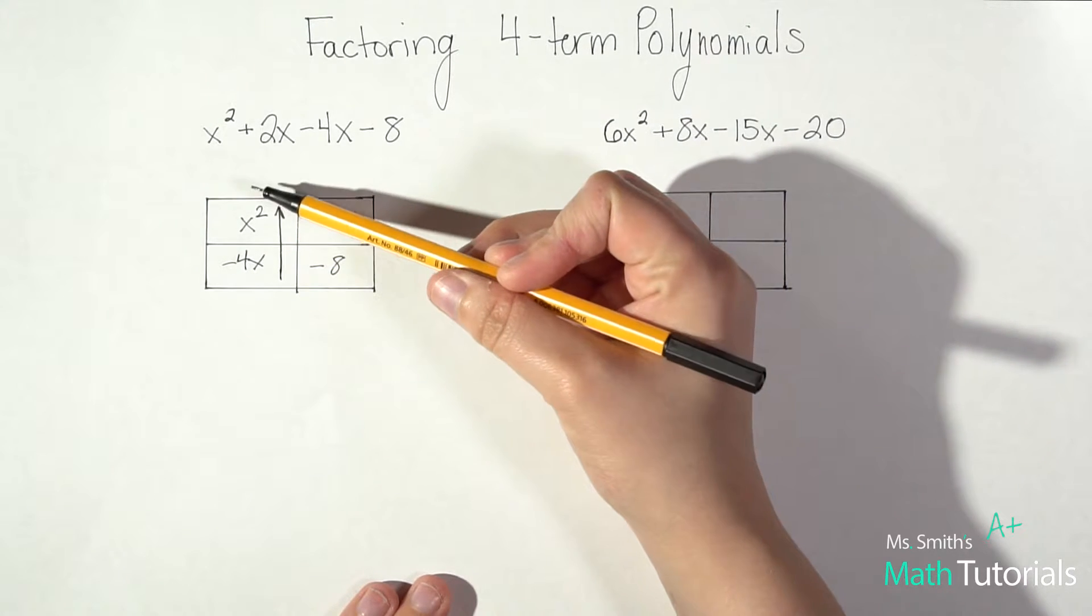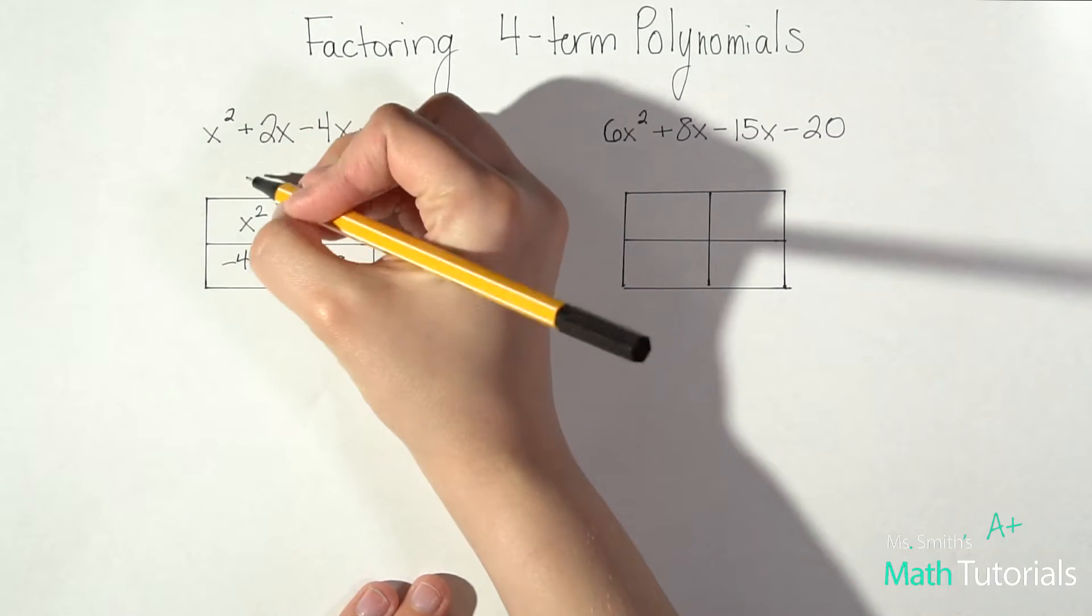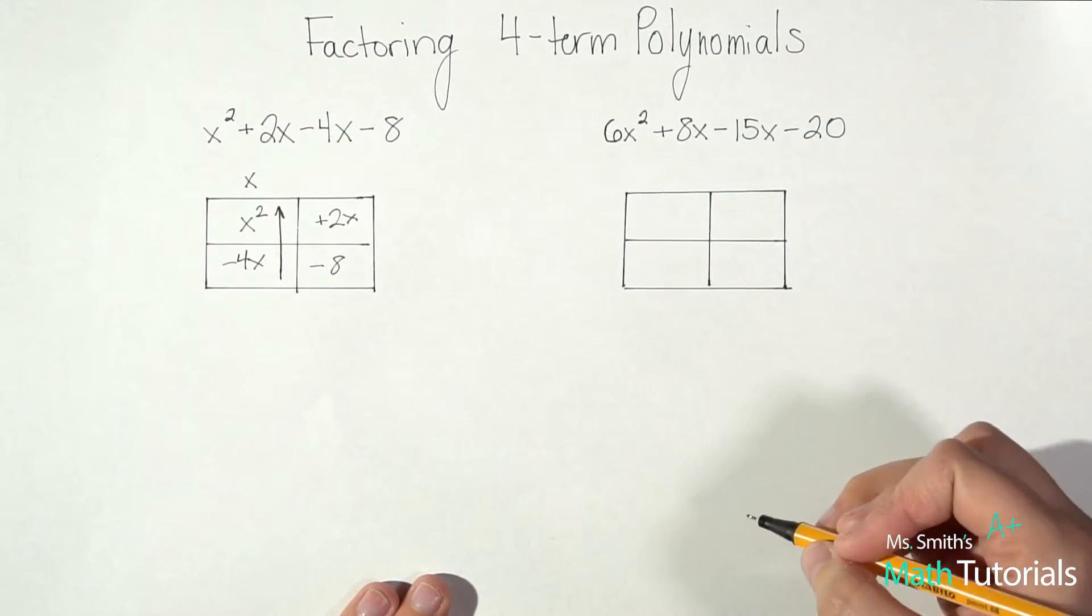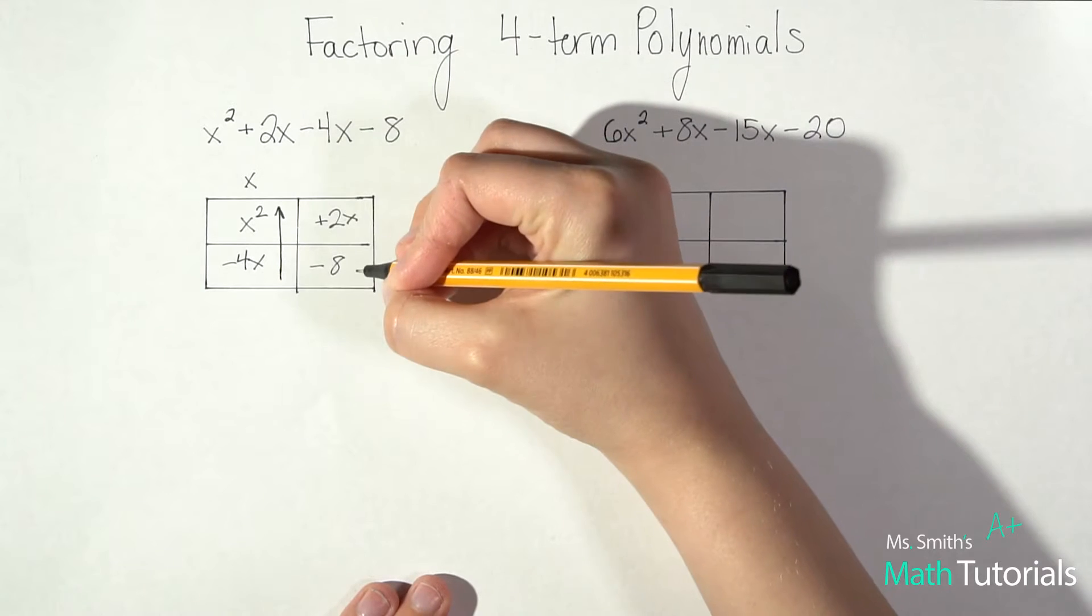I see that we've got an x squared, that means that's two x's and just an x. So the largest amount of x's I can pull out would be just 1. So if you want to write 1x you can, you don't have to.